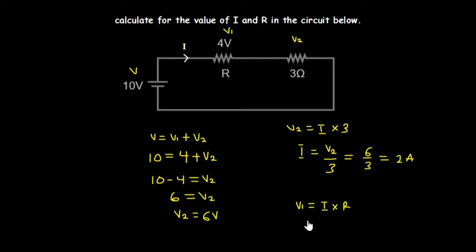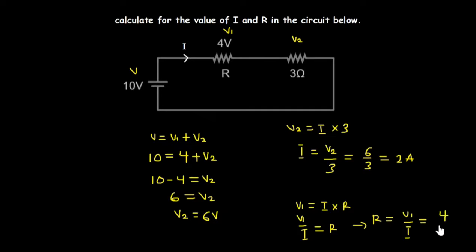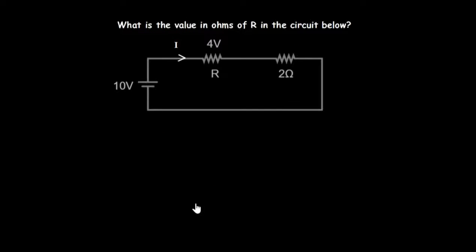Now that we know I, which flows through both resistors, we can calculate the value of R. Using the formula V1 equals I times R, and making R the subject: R equals V1 divided by I. V1 is 4 volts and I is 2 amperes, so R equals 4 divided by 2, giving R equal to 2 ohms. So we got I equal to 2 amperes and R equal to 2 ohms.